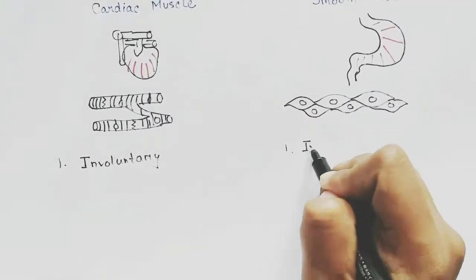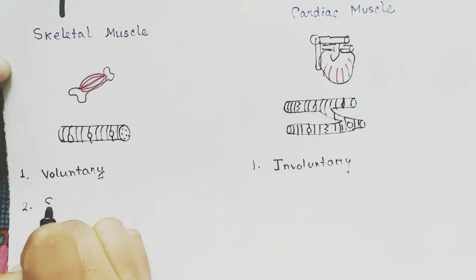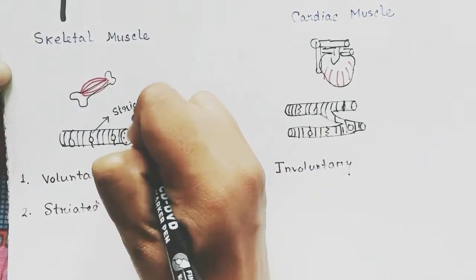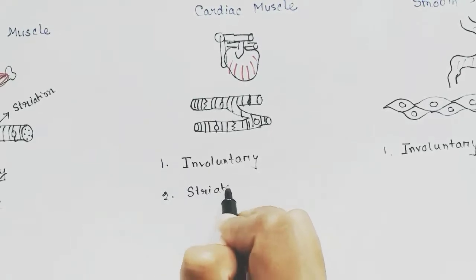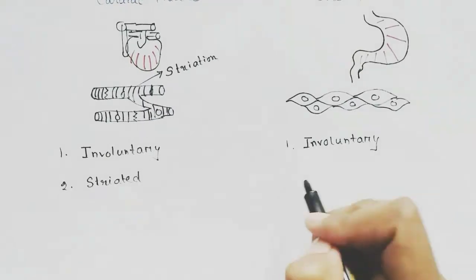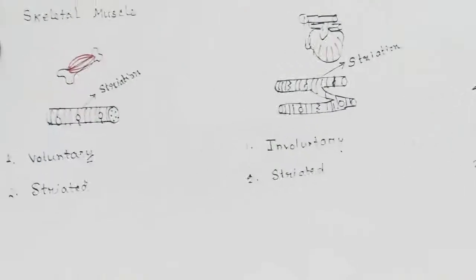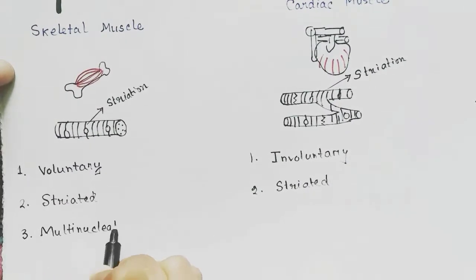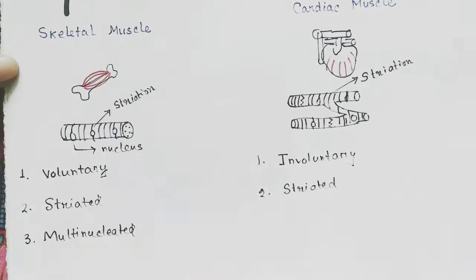Smooth muscle is also involuntary. Skeletal muscle is striated, that is striations are present on the muscle. Cardiac muscle is also striated. But smooth muscles are non-striated, no striations present. Skeletal muscles are multi-nucleated, one muscle cell having more than one nucleus.